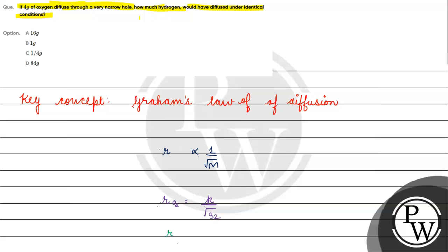The rate of diffusion of hydrogen — since it is a dihydrogen molecule, one hydrogen atom is 1, and two is 2, so the molecular mass will be 2. Therefore the rate of diffusion of hydrogen will be K divided by root of 2.